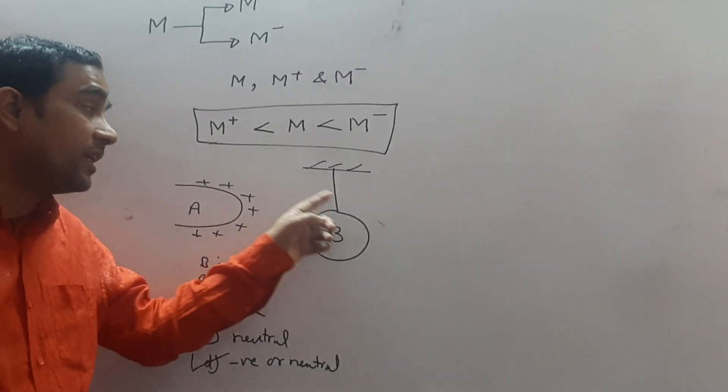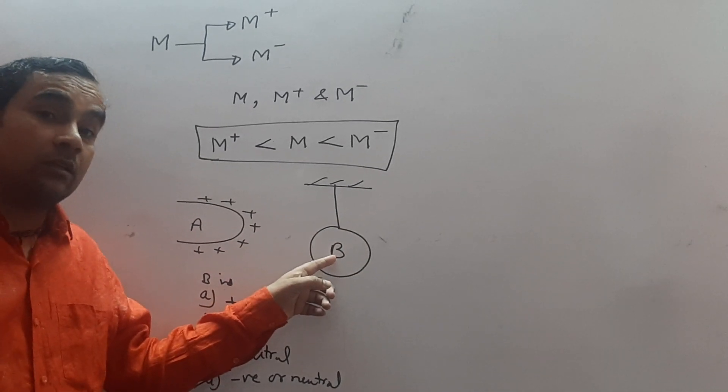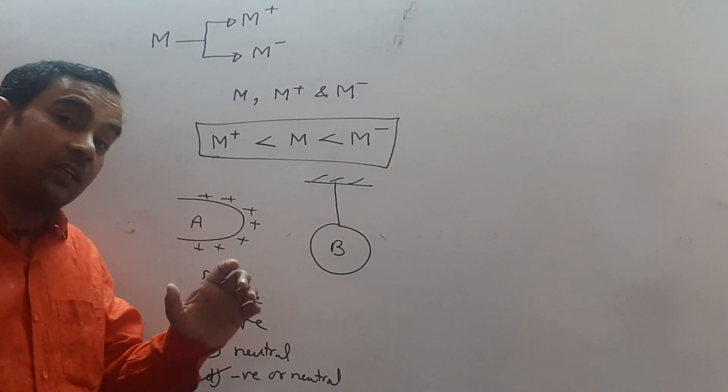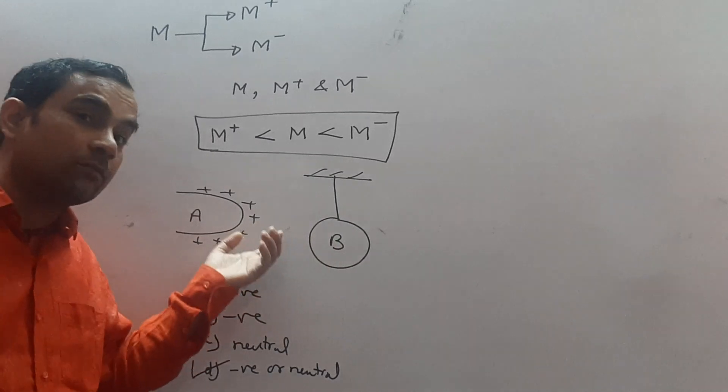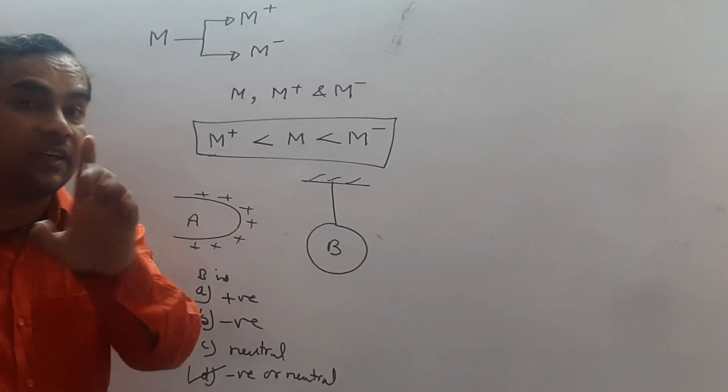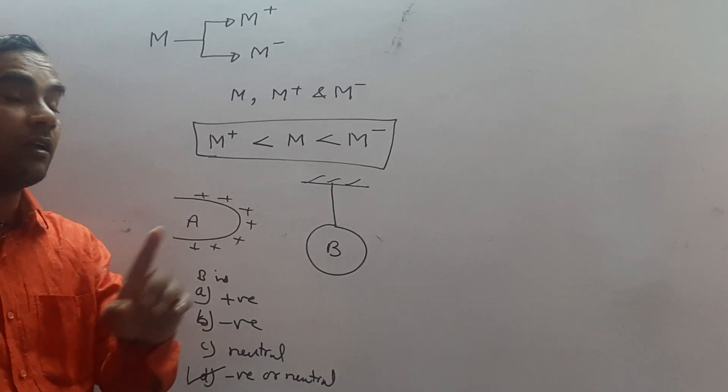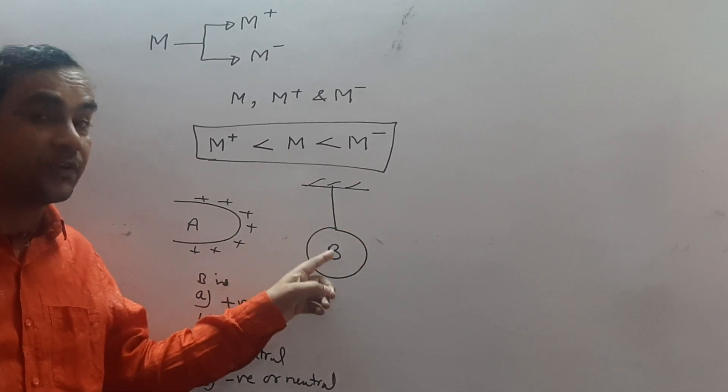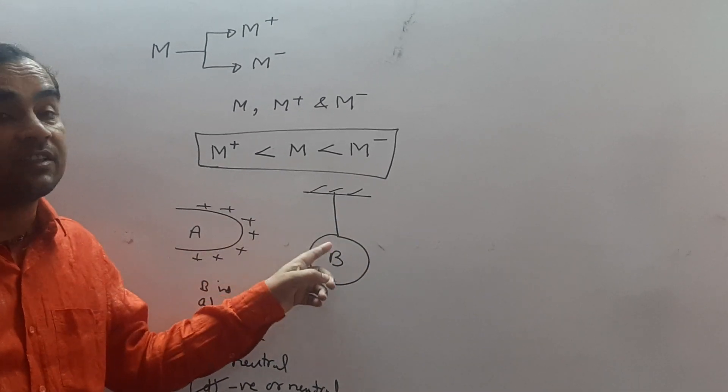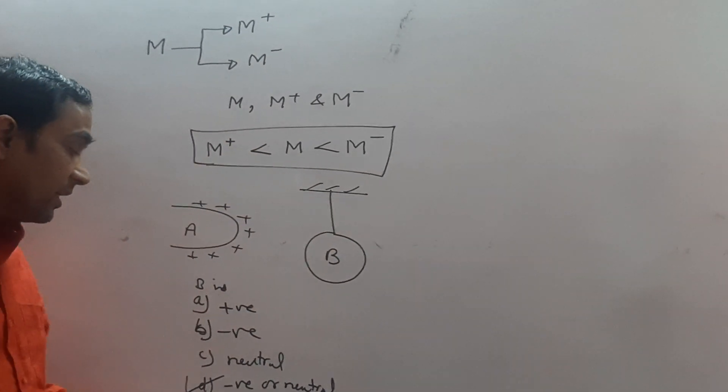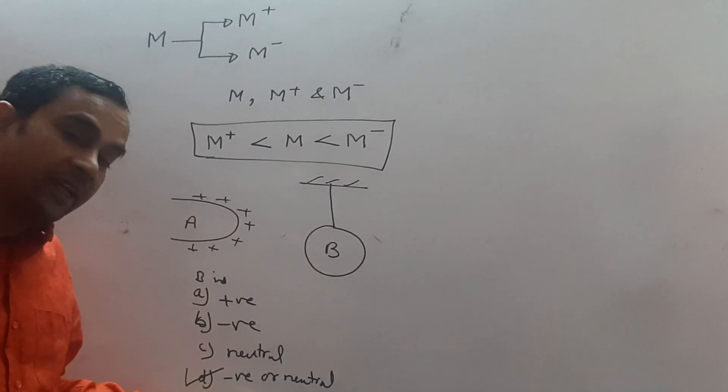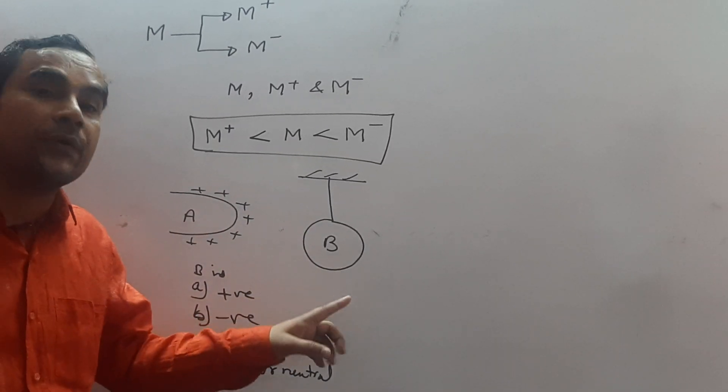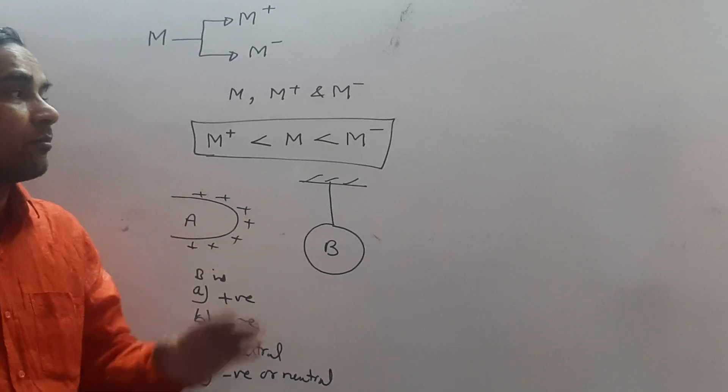in case when B is neutral, in this case also A attracts B due to induction. Because in induction, opposite nature of charge is induced. So A attracts B. So our answer is B may be negatively charged or neutral.